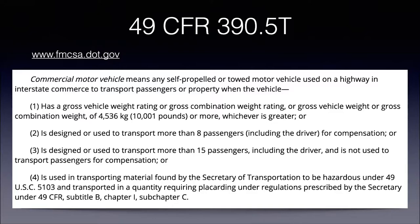The vehicle has either a gross vehicle weight rating or combination weight rating — or gross vehicle weight or combination weight — of 10,001 pounds or more, whichever is greater. Point two: it is designed or used to transport more than eight passengers including the driver for compensation. Point three: it's designed or used to transport more than 15 passengers including the driver, but not necessarily for compensation. And lastly, it's used to carry a quantity of hazardous materials that requires placarding.